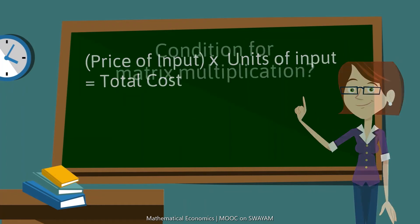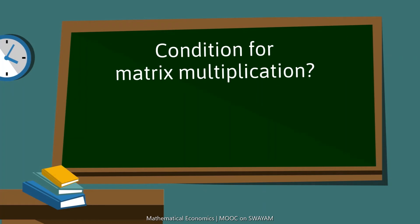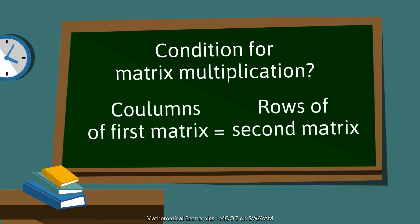Recall the condition for matrix multiplication. For matrix multiplication, the number of columns in the first matrix must be equal to the number of rows in the second matrix.